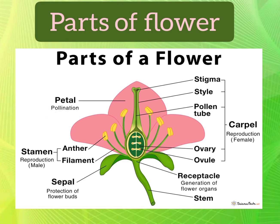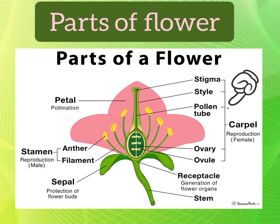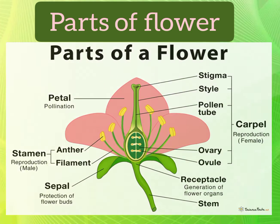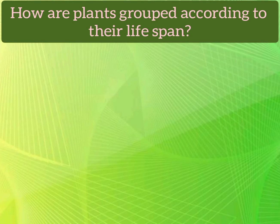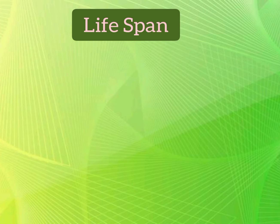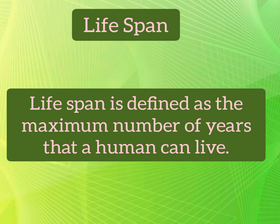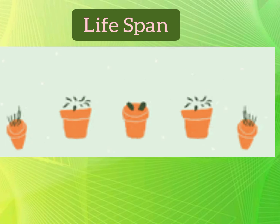The carpel is the female part of a flower. It consists of a stigma, style and ovary with ovules. Now let's look at how plants are grouped according to their life span. Life span is defined as the maximum number of years that an organism can live. Just like humans, plants are also grouped according to their life span.